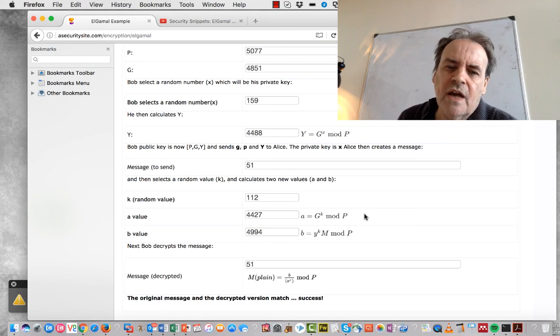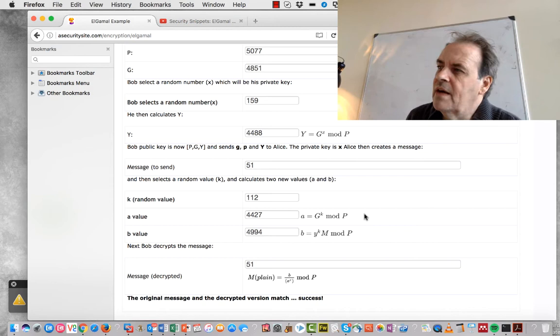Let's have a look at the ElGamal encryption methods and how it works. ElGamal is a public key encryption method where we have a public key and a private key. It's often used to sign for things where we sign with a private key and then we identify ourselves with the public key.